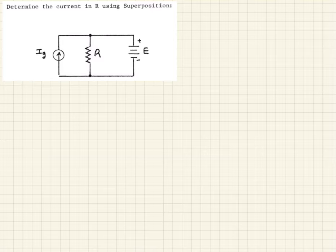So this is a very quick and simple example showing how we would find the current in R using superposition. And with this we're not even using values, we're just using the definition of the elements.